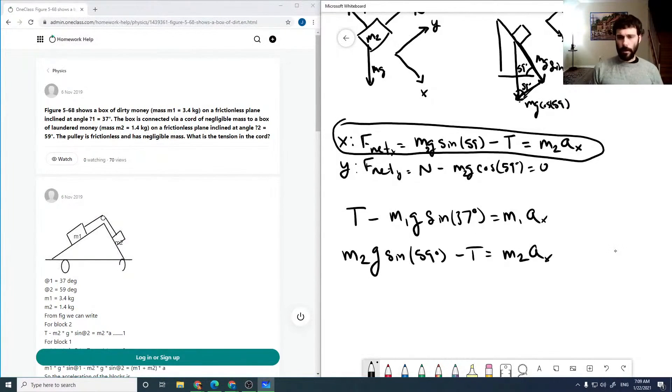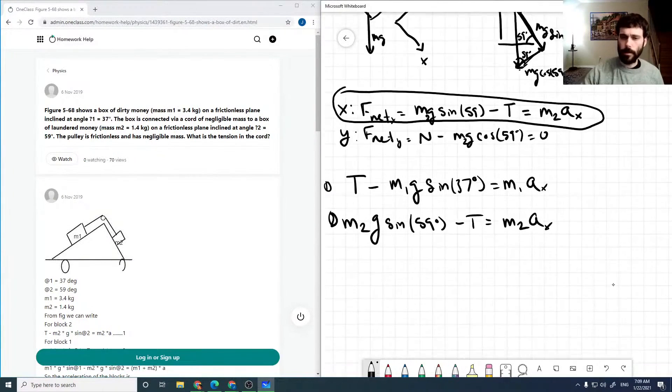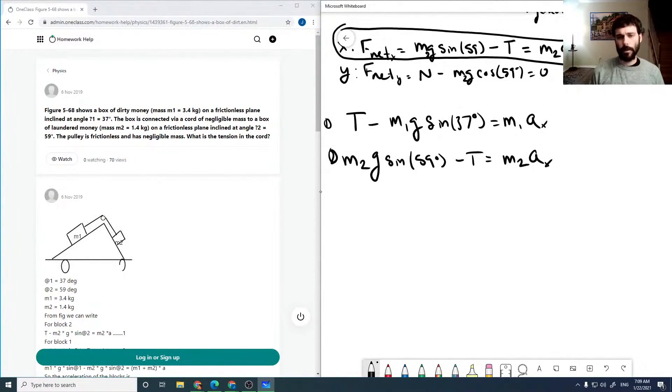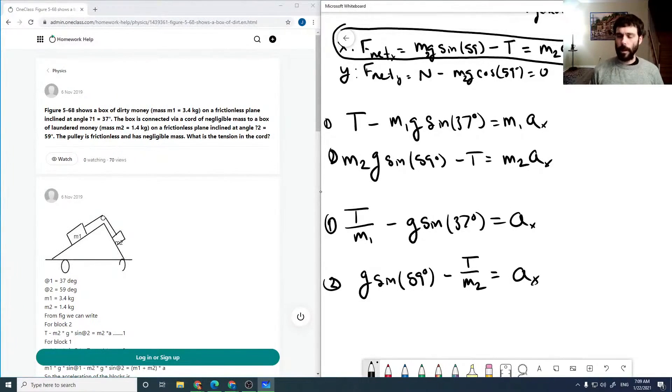Let's go ahead and divide out the masses in the two equations here. So our first equation becomes T over m1 minus g sine 37 degrees is equal to our acceleration x. And our second equation becomes g sine 59 degrees minus T over m2 equals our acceleration x. So now we can subtract these two equations.